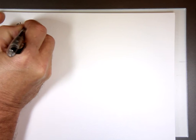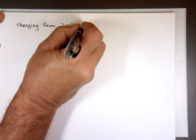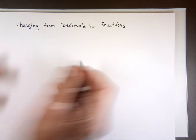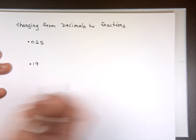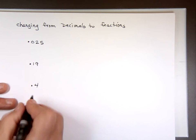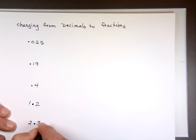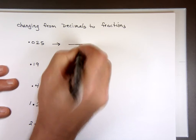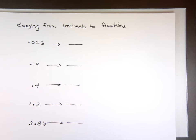What about changing from decimals to fractions? 0.025, 0.19, 0.4, 1.2, 2.36. All these are decimal numbers. Now, I want to change them to fractions.